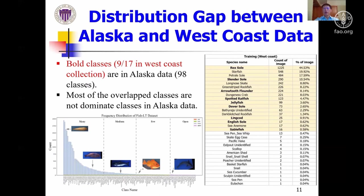It would be better to directly use the trained identification model from the Alaska dataset — the source domain — for identifying fish from the West Coast dataset, the target domain, which has fewer and noisier samples, without fine-tuning to avoid laborious annotation effort. Unfortunately, when comparing the distribution of 9 overlapping classes between these two datasets, even though both are long-tail distributed, they are quite different, and those overlapping West Coast classes are not the dominant classes in the Alaska dataset. This is why the long-tail recognition strategy was applied when training on the Alaska dataset.